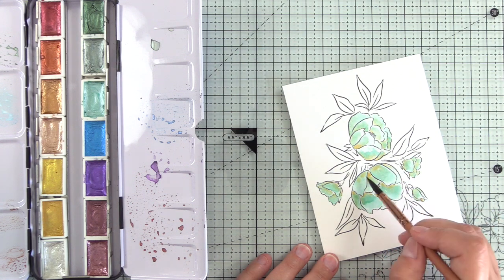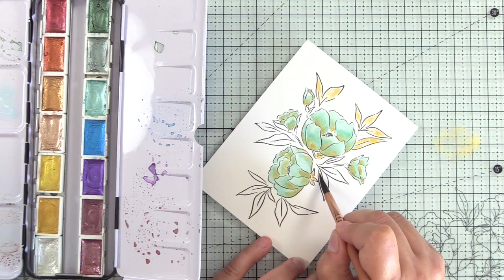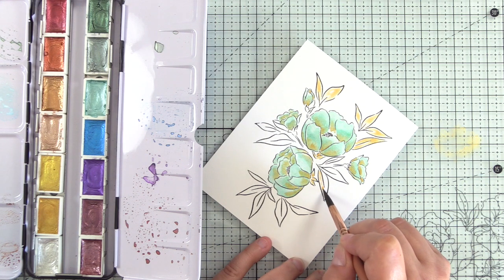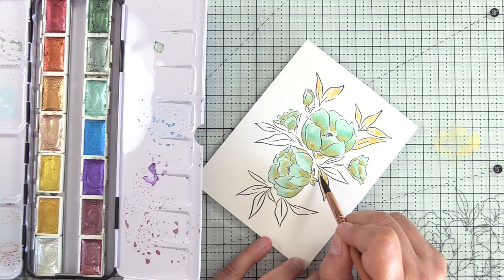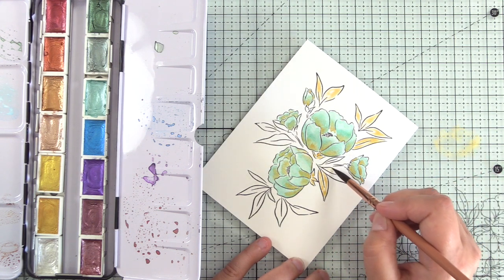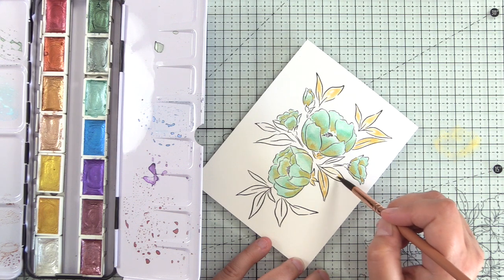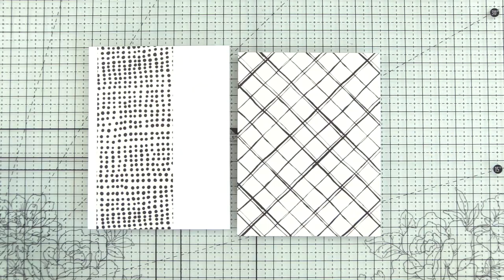So here I'm just adding in that gold that I missed the first time around. And then I'll move on to the leaves, which are only going to be the gold pearl again, that wet on dry technique. I really love the look of metallic watercolors on white paper. I know traditionally a lot of people use them on darker cardstocks, but I love how soft they look on the white cardstock. So if you haven't tried that, give it a whirl.